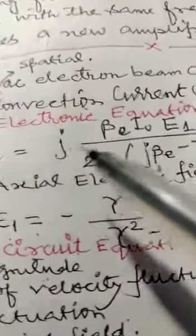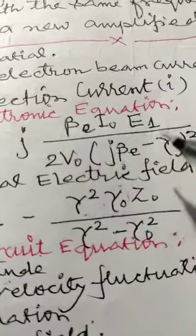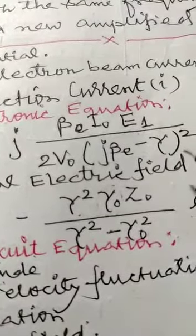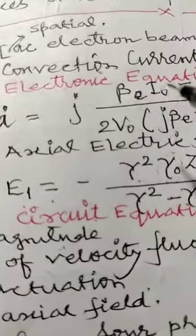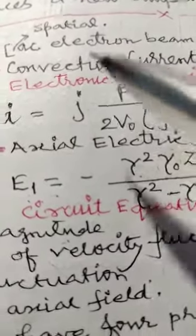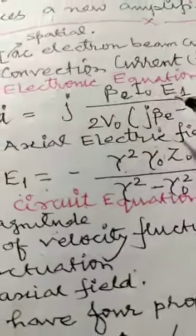The conversion current formula is given by I, and I is equal to J beta E I0 E1 divided by 2V0 into J beta 0 gamma to the power 2, where I0 is beam current, V0 is beam voltage. This equation is also known as the electron equation and the axial field.